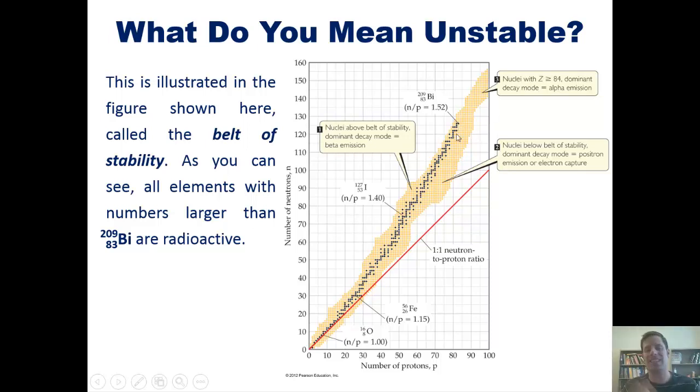In summary, any dot that's yellow represents an element that's unstable from a nuclear standpoint. Generally speaking, if you're above this belt of stability, these blue dots, these are isotopes that will have a preferred mode of decay, beta emission. As you get nuclei that have atomic numbers above 84, the dominant decay mode is alpha emission because they want to decrease their number of neutrons relative to protons. And elements shown down here below the belt of stability have a preferred decay mode of positron emission or electron capture.